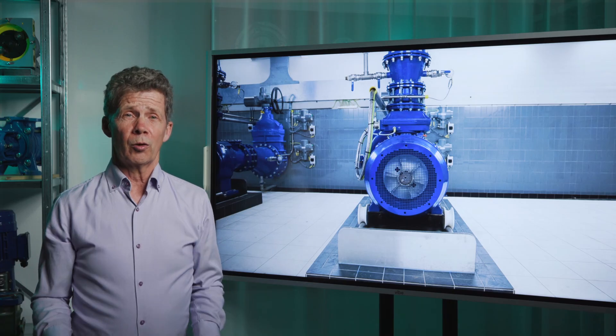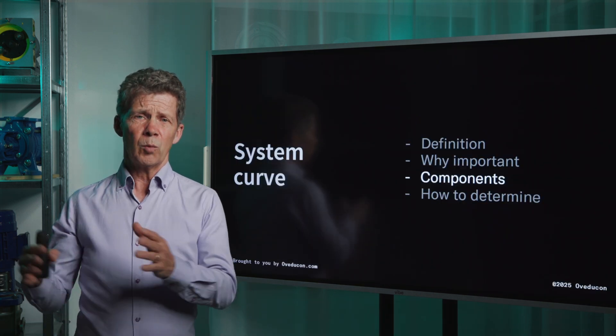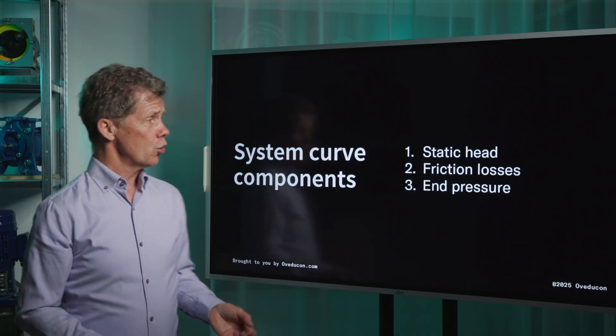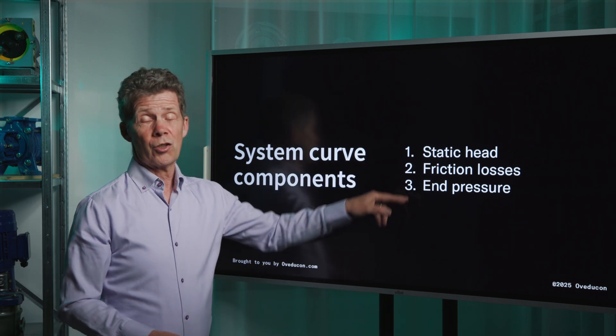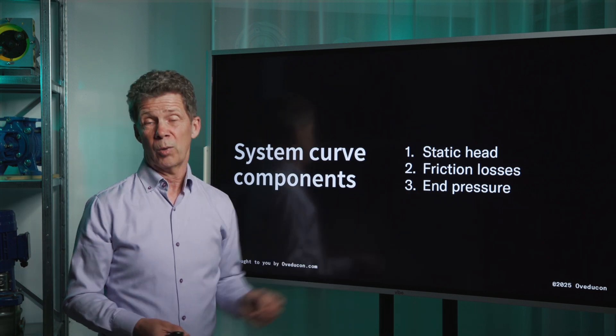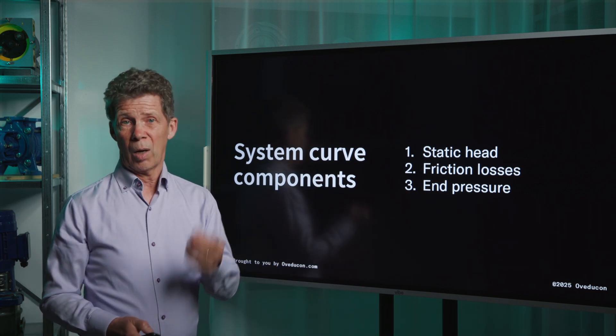Your system curve consists of different components. If you want to transfer a medium from A to B, it doesn't do it by itself. You have to overcome a certain resistance. Those resistance components are your static head, your friction losses — also called dynamic head — and your end pressure. I will cover these topics one by one.